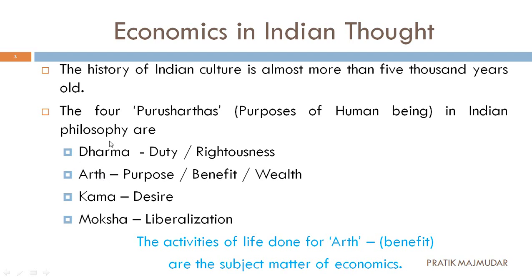Kama and moksha. Dharma means duty or righteousness — what is your duty towards the society. Artha means what is the purpose, what is the benefit, what is the wealth we are going to earn from the society. Kama means desire — what you want to do, that is your desire. And moksha means liberalization — reducing the rules and regulations from the society. So dharma, artha, kama and moksha are the four purusharthas we follow as per Indian philosophy. The activities of life done for artha — that means for the benefit of the society — are the subject matters of economics. From these four philosophies, we are following artha: what we are doing for the purpose, what is the benefit from this, and what wealth we are creating — that is what will be discussed in this particular topic.